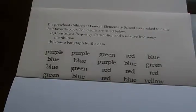In this problem we are trying to organize data in some form that we can easily understand. Part A asks to construct a frequency distribution and relative frequency distribution, and in part B we have to draw a bar graph. The data is given in the form of names of colors.